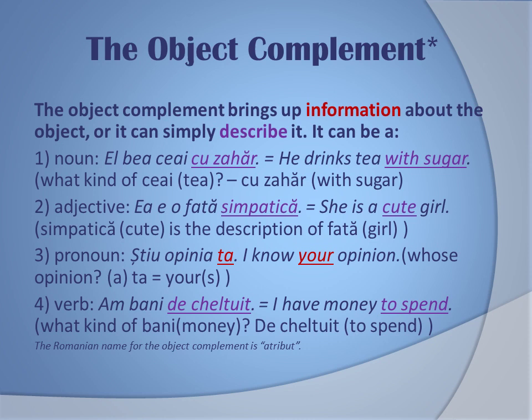The object complement, as we can understand from its very name, brings up information about the object or simply describes it. First example with a noun: 'el bea ceai cu zahăr' — he drinks tea with sugar. What kind of tea? With sugar. Second example with an adjective: 'ea e o fată simpatică' — she's a cute girl. What kind of girl? 'Fată' is 'simpatică' — cute. It's an obvious description.